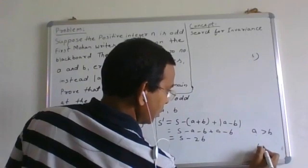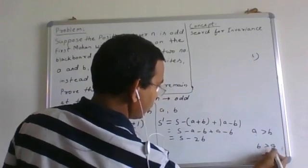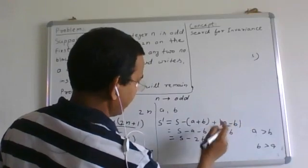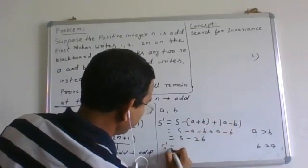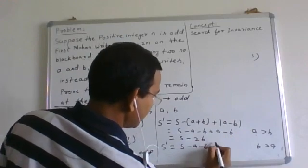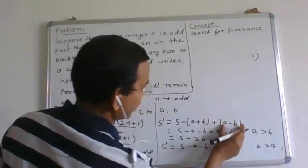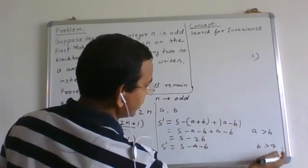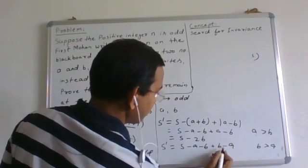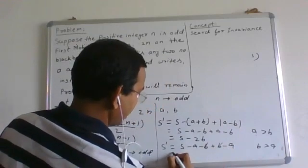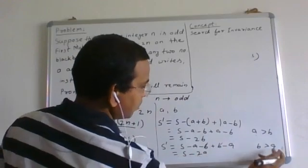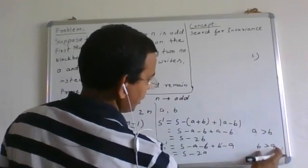Again if b is greater than a, then what happens? This output will be b minus a. So we will write in this case, s dash will be equal to s minus a minus b. And what will be the modulus output? When b is greater than a, it will be b minus a. So plus b minus a. Here b cancels out and answer is s minus twice of a. What is a? Minimum of these 2 numbers.